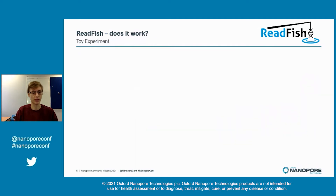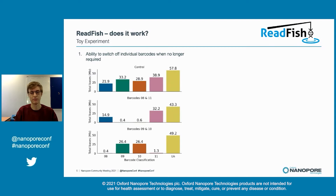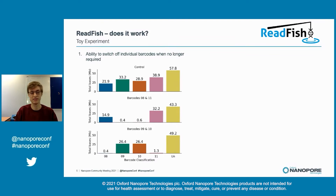Can we switch off individual barcodes? Yes. Here we switch off barcodes 9 and 10, enriching for barcodes 8 and 11, and then in the subsequent run we do the inverse, enriching for barcodes 9 and 10 while depleting barcodes 8 and 11. This is stable and it works.